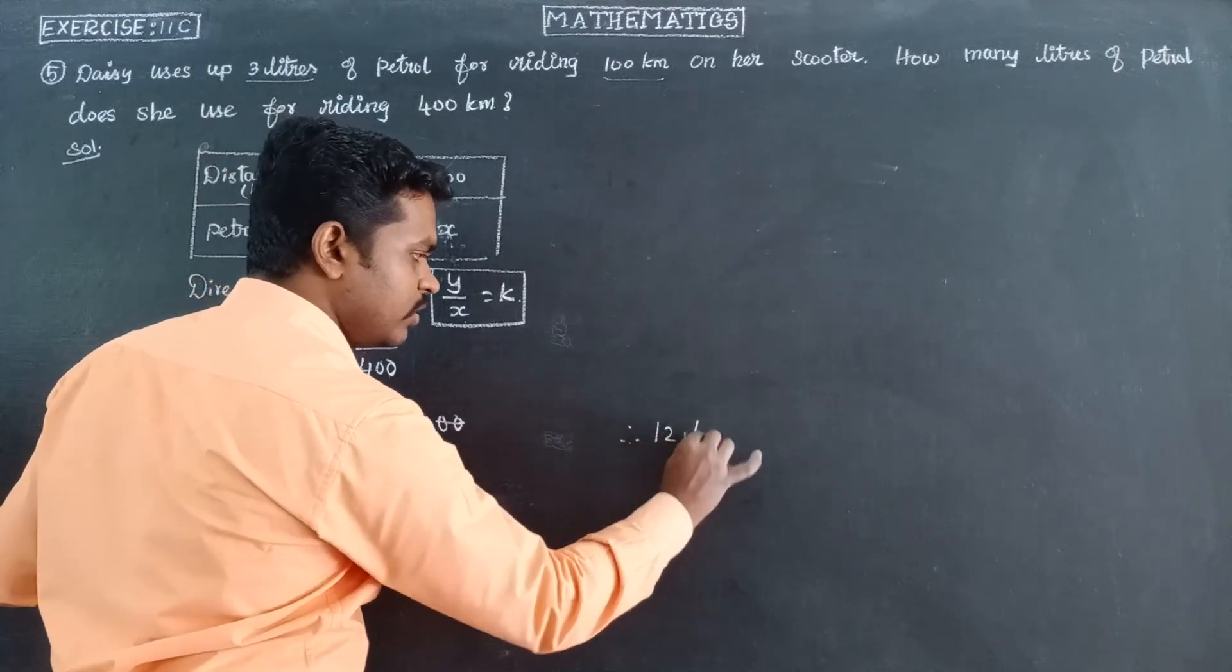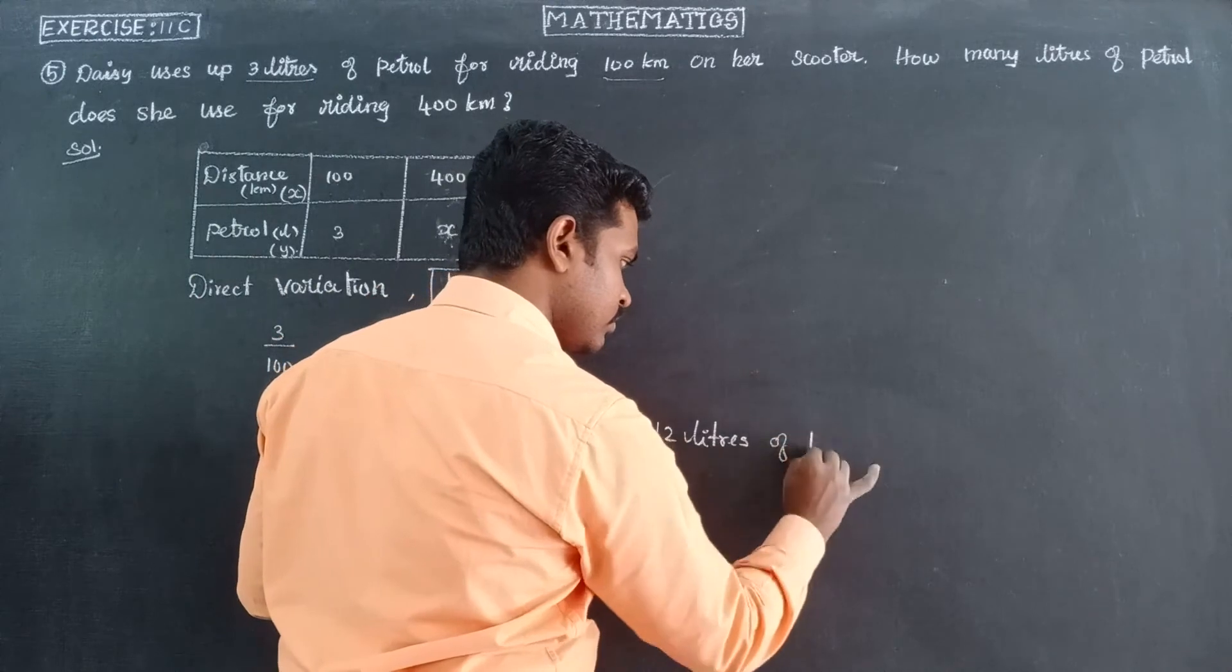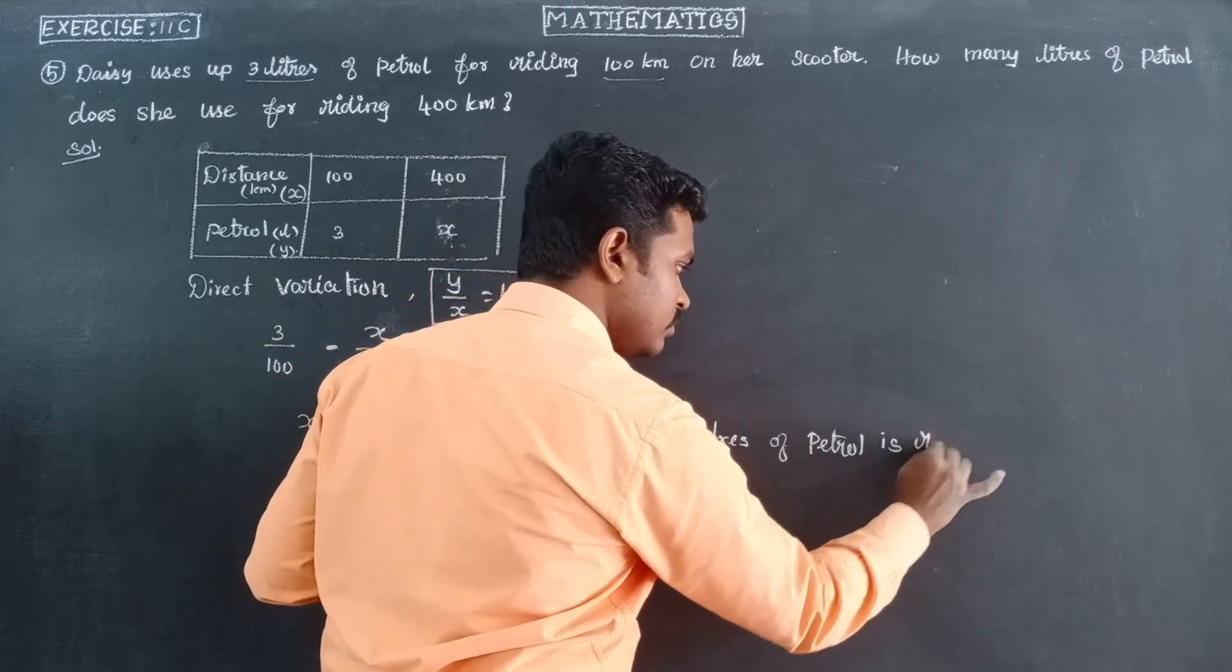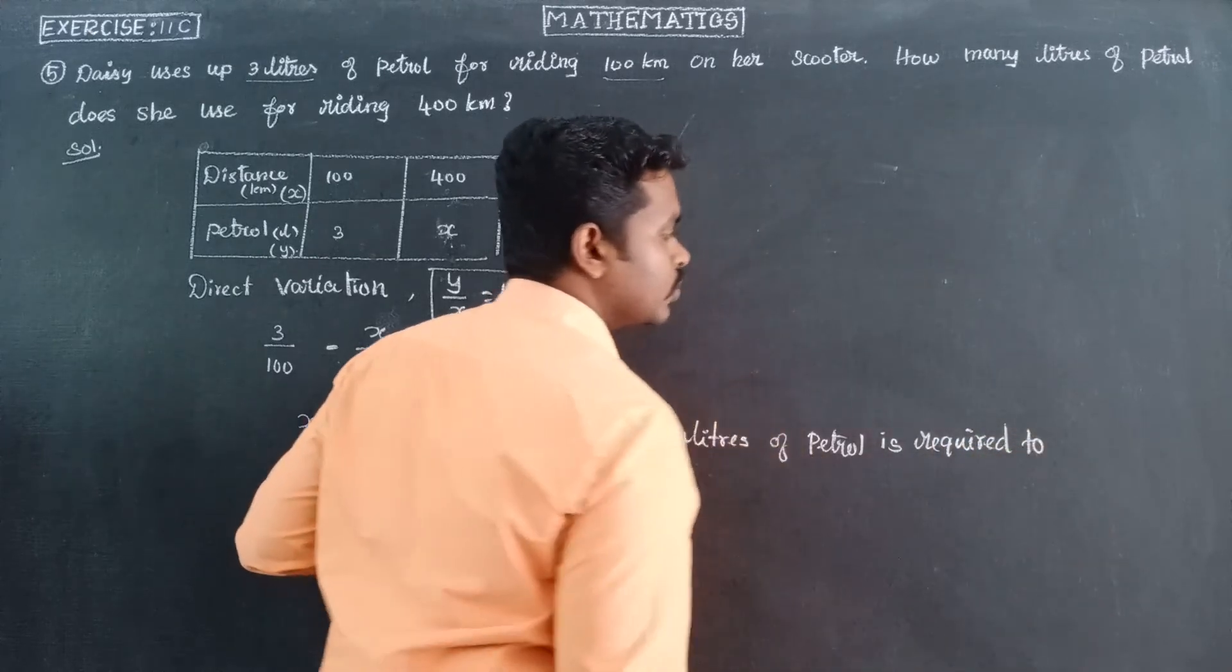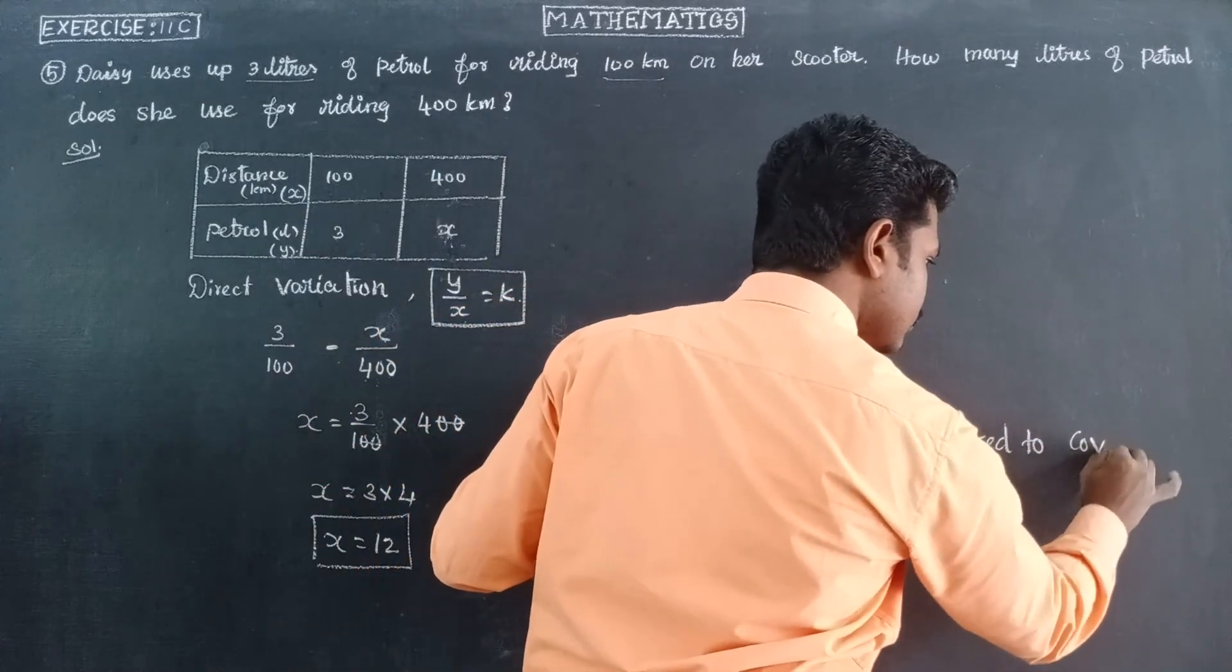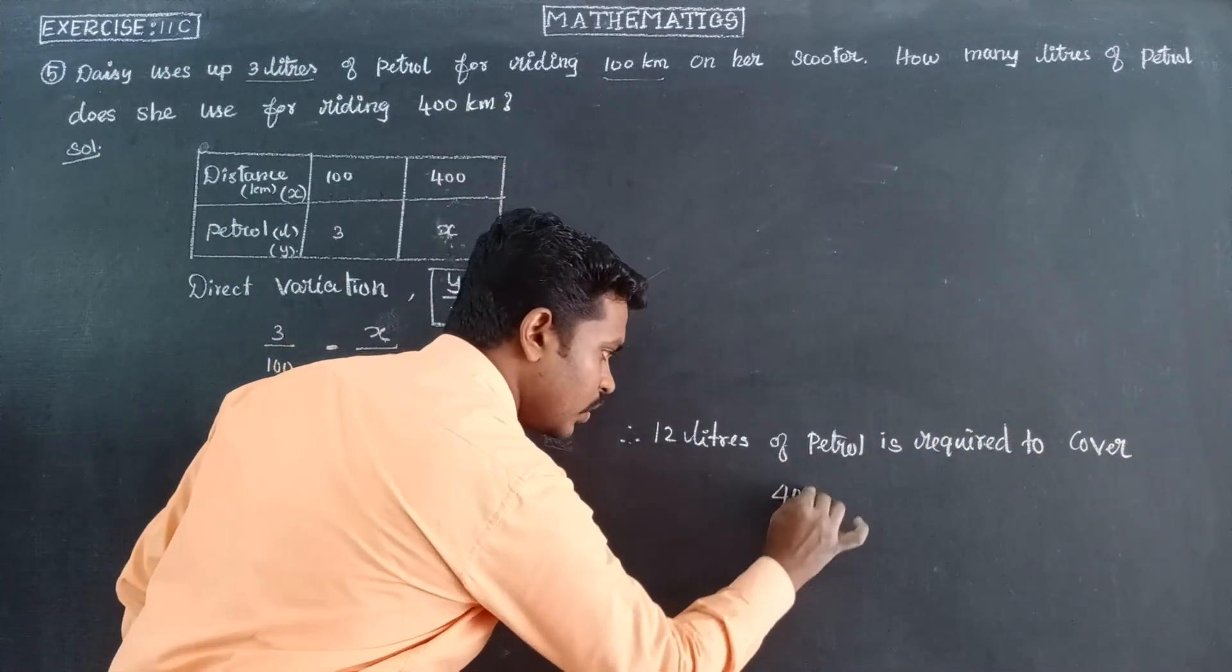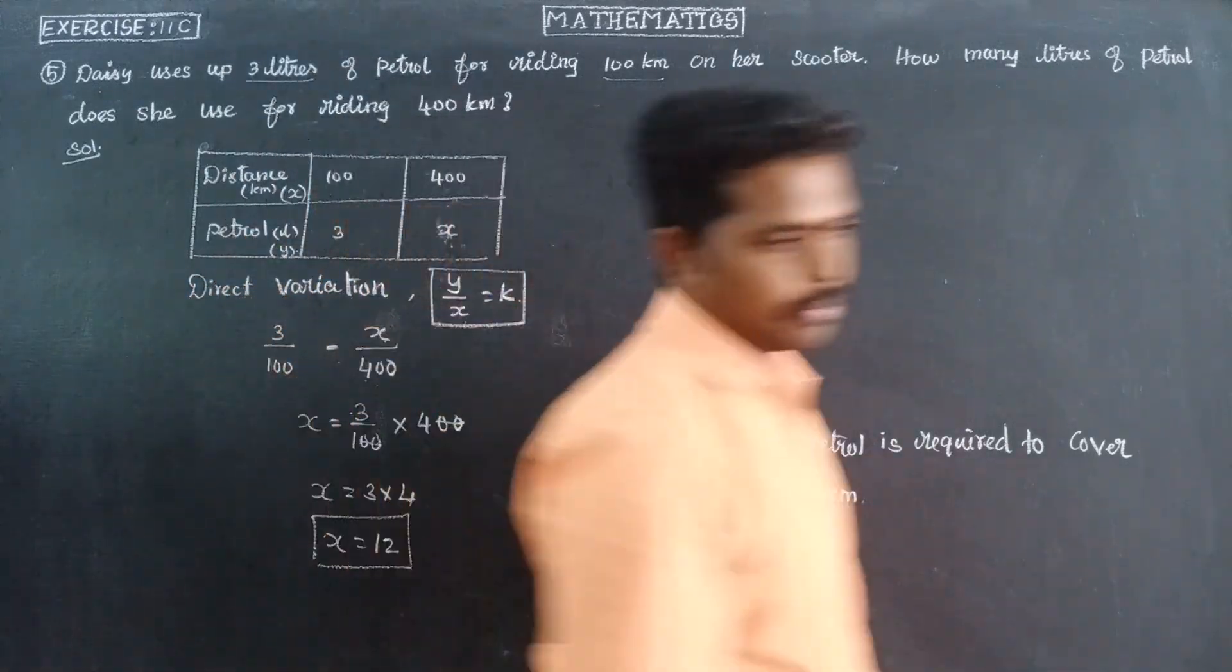12 liters of petrol is required to cover 400 km. 400 km distance covered, 12 liters of petrol is required.